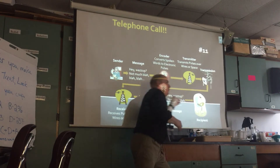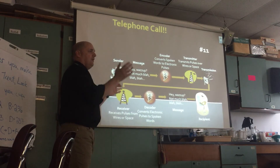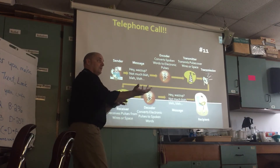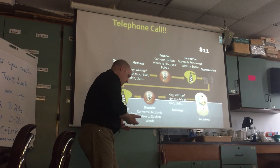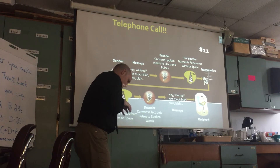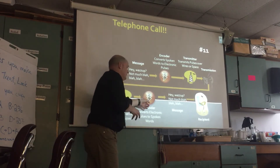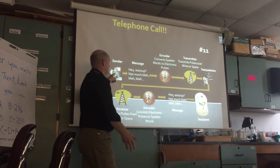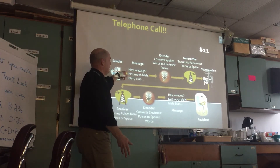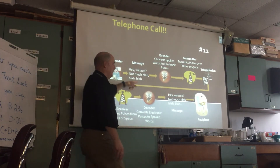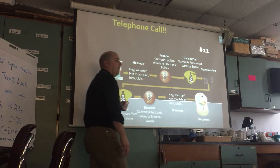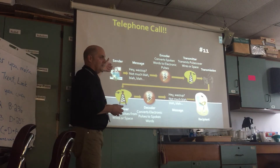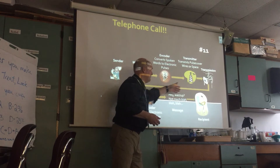The transmitter sends the signal to whatever phone you're calling. Their phone has a receiver, which catches all those electronic pulses. Then it hands off to the decoder, which decodes the message — and what comes out is your words. If the recipient responds, they become the sender, and this process goes back and forth.